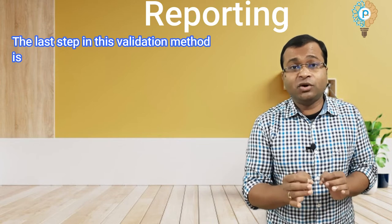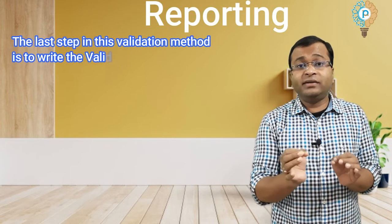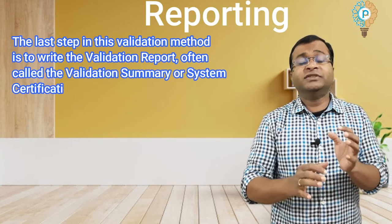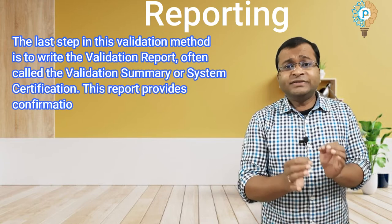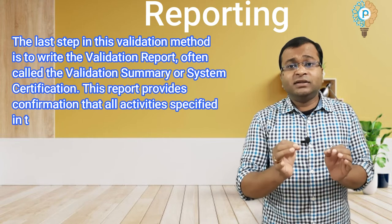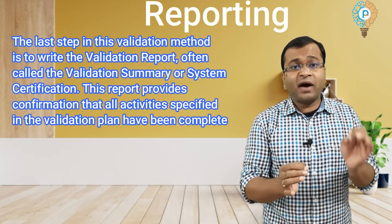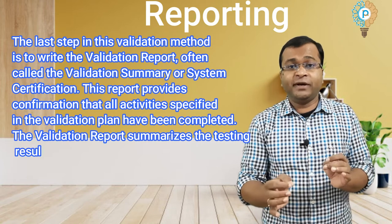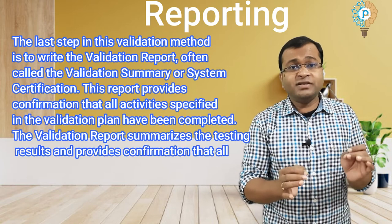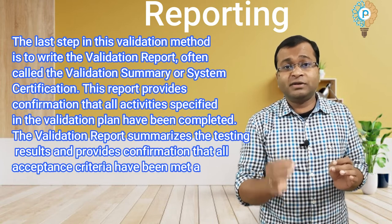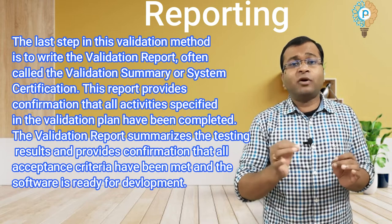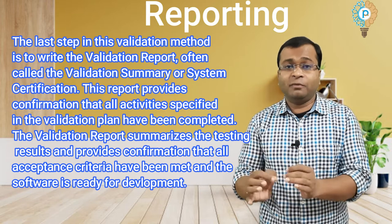The last step of this validation method is to write the Validation Report, often called the Validation Summary Report or System Certification. This report provides confirmation that all activities specified in the Validation Master Plan have been completed. The Validation Report summarizes the testing results and provides confirmation that all acceptance criteria have been met and the software is ready for use.